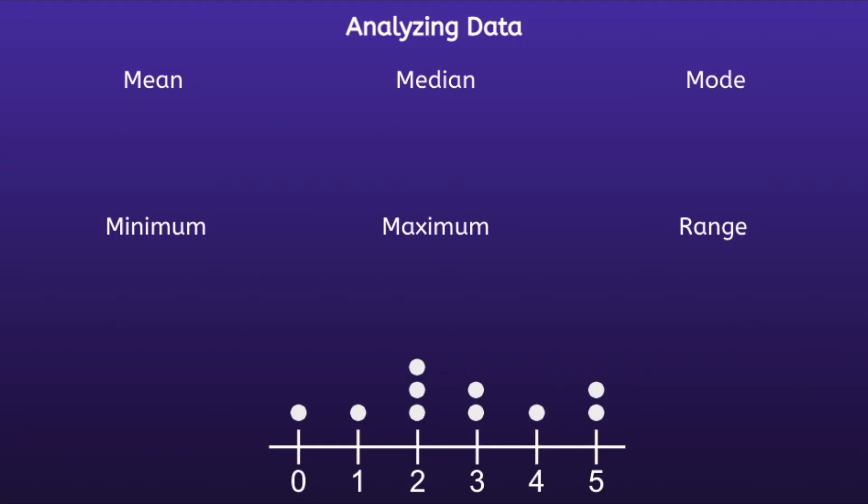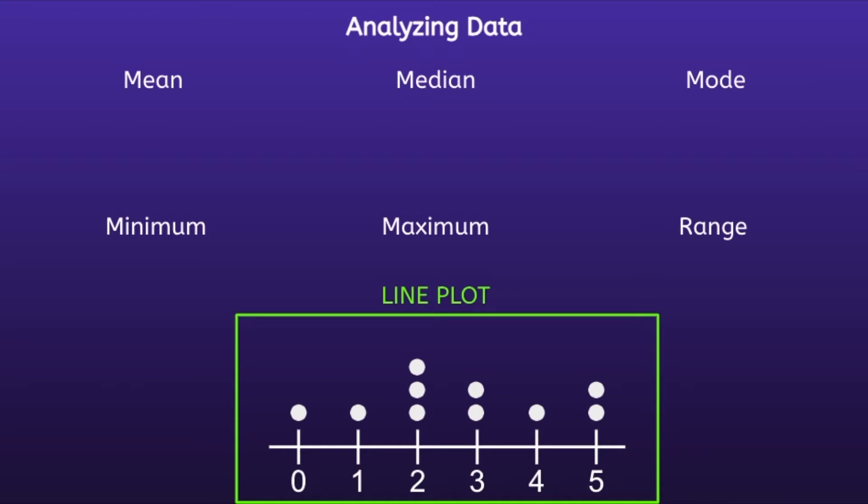Analyzing Data. If you look at the bottom of the slide, you will see a line plot. This line plot includes different data points. There is one zero, one one, three twos, two threes, one four, and two fives.